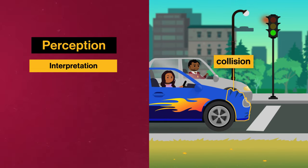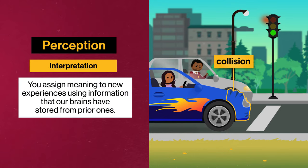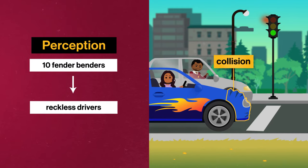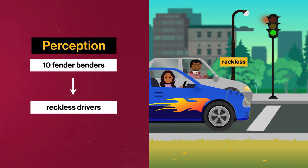Then you move to interpretation, which is the third and final part of perception. Here you assign meaning to new experiences using information that our brains have stored from prior ones. So let's say that you've seen 10 fender benders, and all of them were caused by reckless drivers. Over time, your brain has formed patterns that lead you to interpret busted fenders as a sign that the driver of this car is reckless too. And that's how the perception process leads you to make meaning from information you absorb in the world around you.